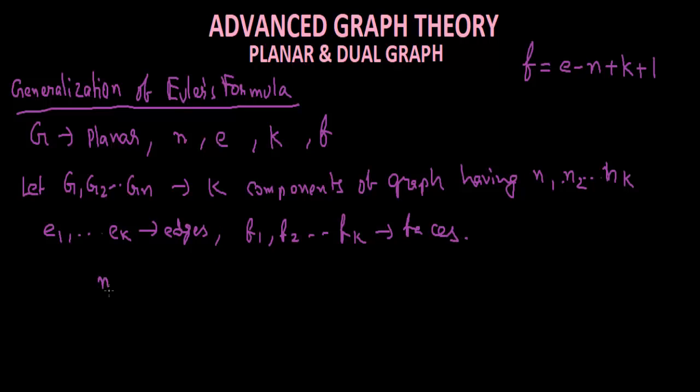The sum of all will be like N1 plus N2 up to NK is N, E1, E2 up to EK is E, and so on for F.